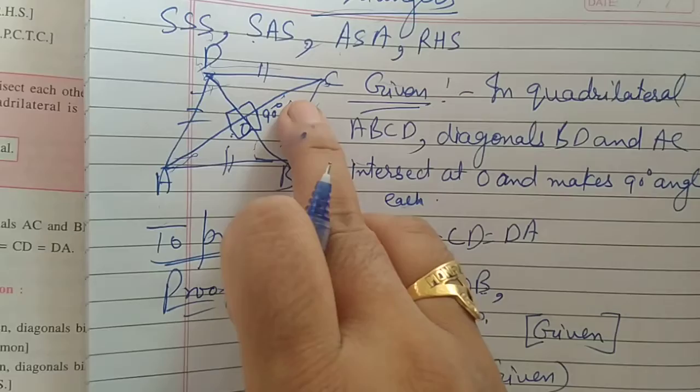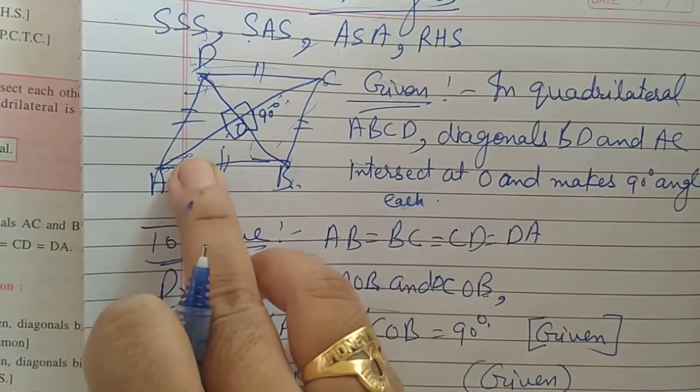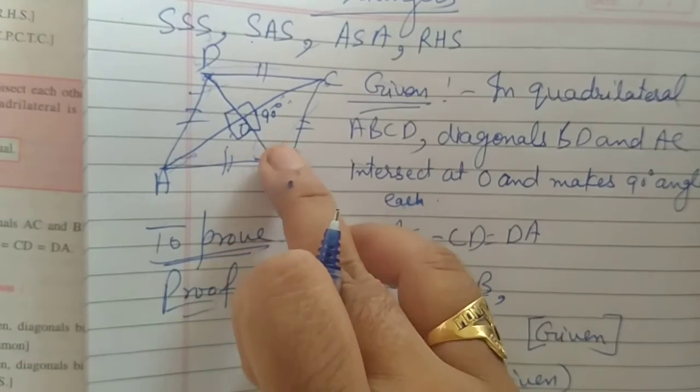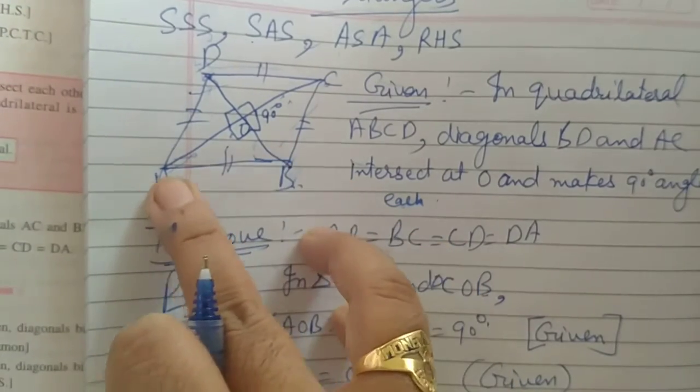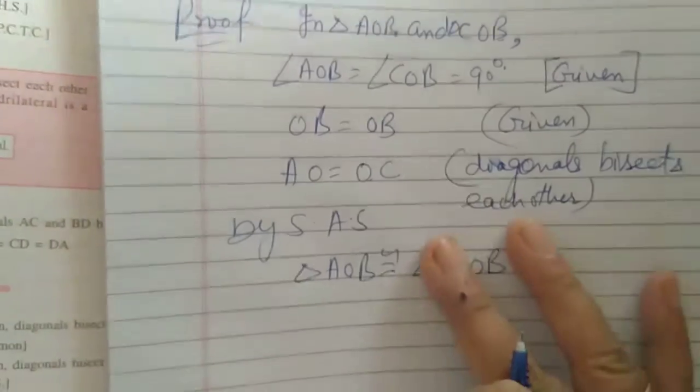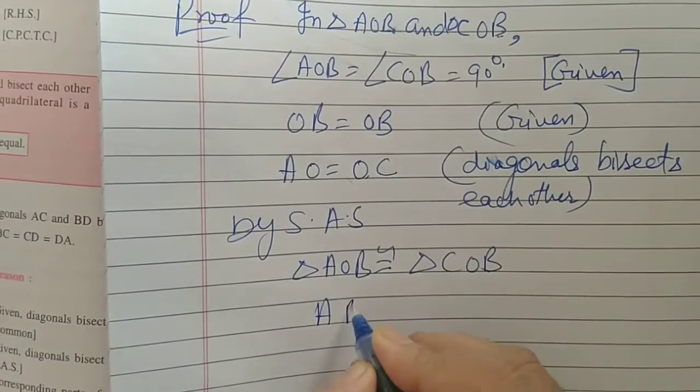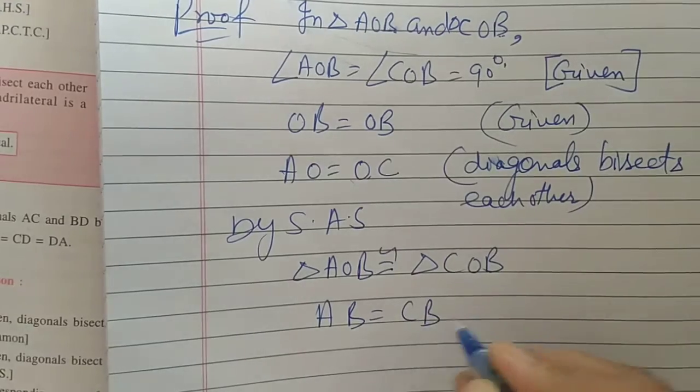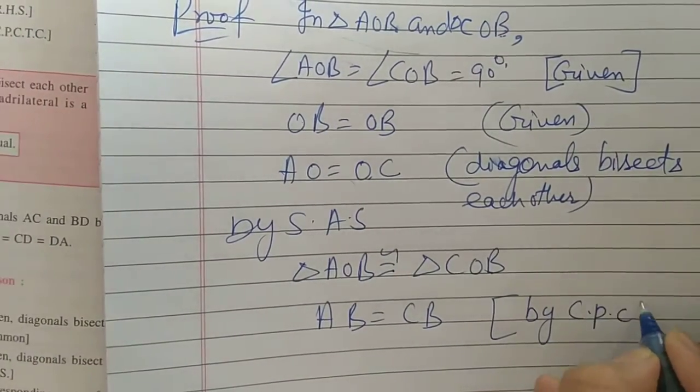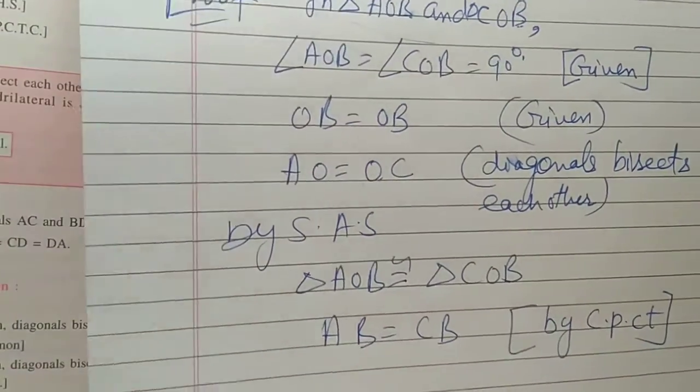So, here this is also 90, this is also 90, so angle A, this angle, will be equal to this angle, this angle will be equal to this. These two sides will be equal, so AB is equal to CB. So, AB is equal to CB. Here, we will write by CPCT.